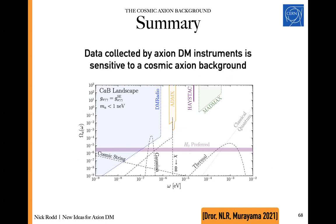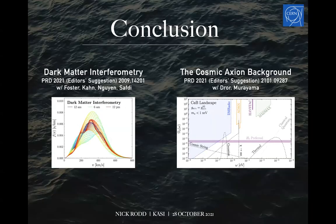To summarize: future instruments could absolutely be sensitive to the cosmic axion background, though many aspects of this picture remain uncertain. The next 10 to 20 years are an exceptionally exciting era for axions and dark matter more broadly — it really could be the era when we uncover what the dark matter of our universe is. The new ideas discussed today — dark matter interferometry and searching for the CAB — show how we can take advantage of the enormous experimental progress that is going to be necessary to make that discovery. Thank you so much for your attention.